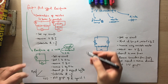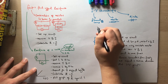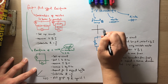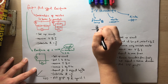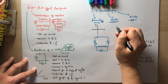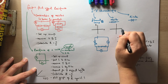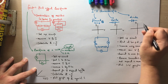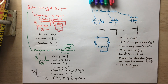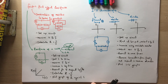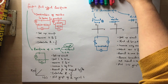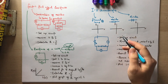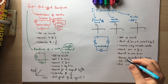Then plot I against V graphs — current on the Y-axis against potential difference on the X-axis. Since you do it in both the positive and negative directions, the graph spans both sides of the origin. We'll look at what to expect for each component. Starting with the easiest, the resistor: providing it is at a constant temperature, a resistor follows Ohm's law and is an ohmic component.